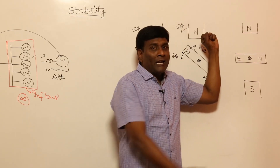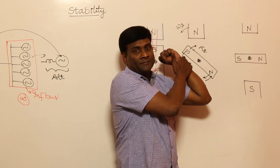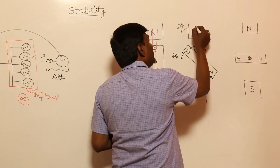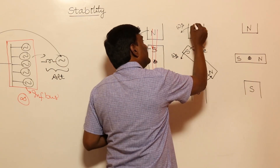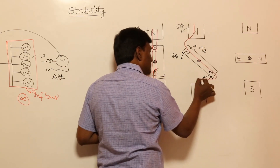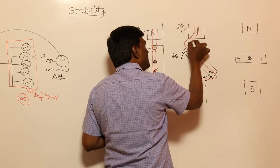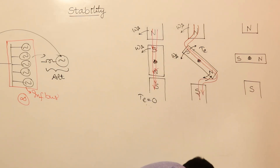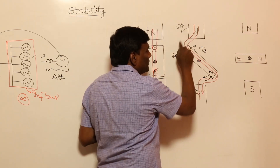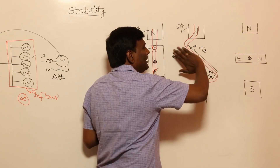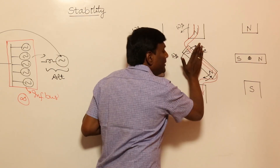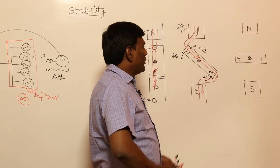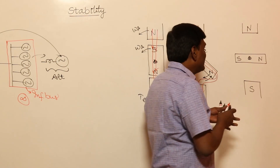The rotor pole is trying to go back, but the prime mover is not allowing it. Under this condition, the flux pattern is stretched — N to S to N to S. My flux is going to be stretched. The moment flux is stretched, it always tries to straighten, so torque will be produced in that direction.